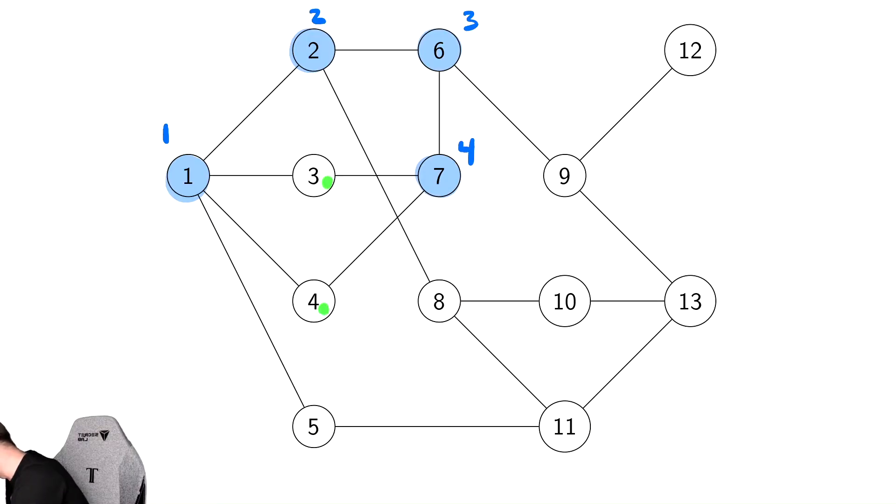From 7, we have two options, 3 or 4. We're going to choose 3 because it is first in numerical order. And then we discover 3. And then from 3, we'll notice we have nowhere new to go. So we are now done with 3. So we're going to write a 6 there as the finishing time.